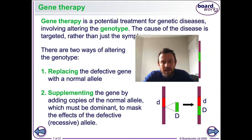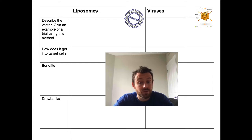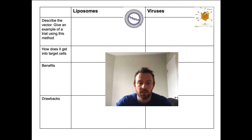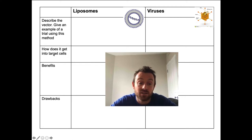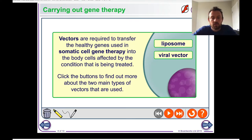The main thing you need to understand is the different vectors we can use to get genes into target cells. In cystic fibrosis therapy, people have tried liposome vectors and modified viral vectors. You're going to fill out notes in a table format: describe the vector, give an example, how does it target and get into cells, and the benefits and drawbacks.